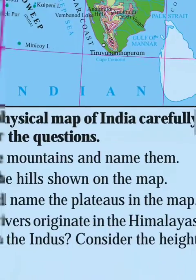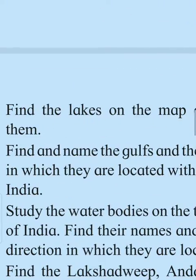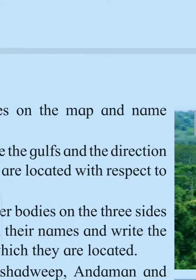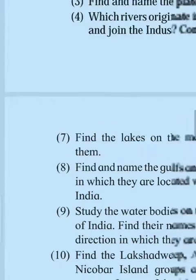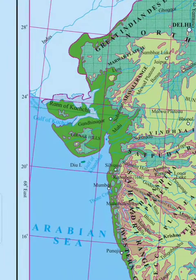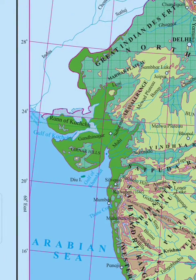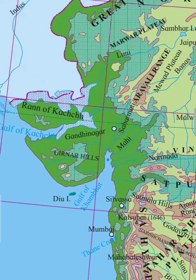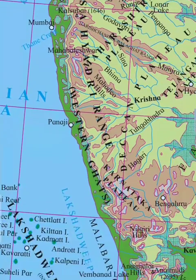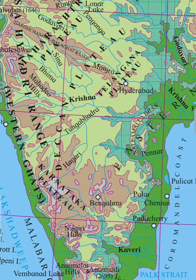Now see the next question. Find and name the gulfs and the direction in which they are located with respect to India. The important gulfs are: Gulf of Kachchh in Gujarat, Gulf of Khambhat in Gujarat — both are in Gujarat. And the next one is Gulf of Mannar. Gulf of Mannar is in the south, to the southern tip of India.